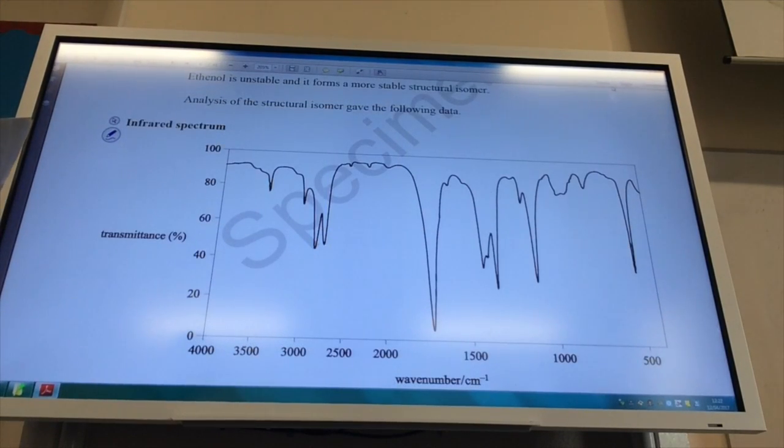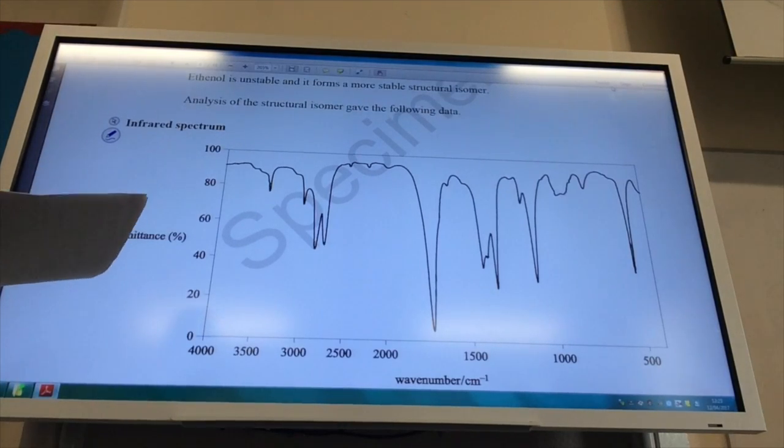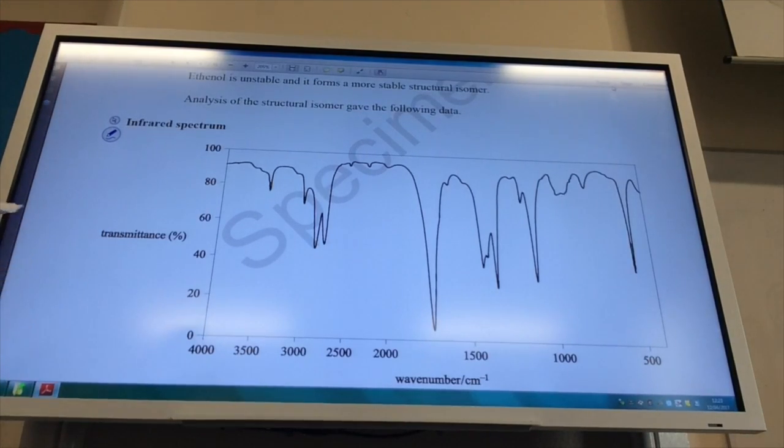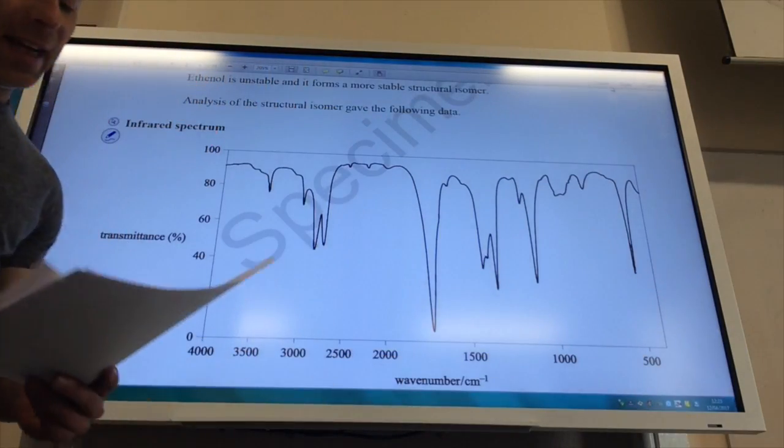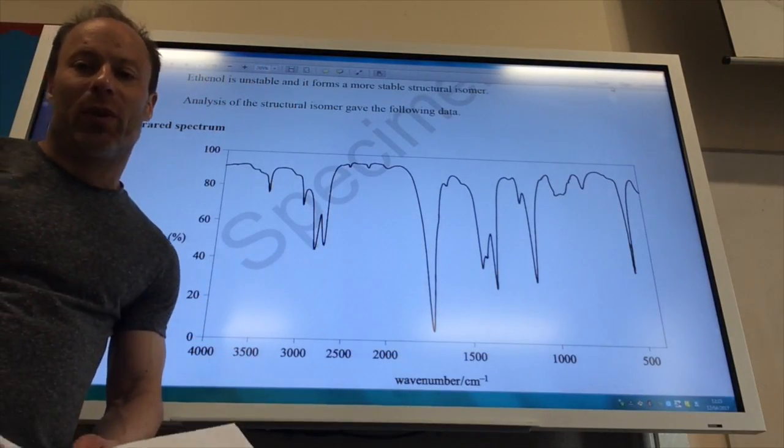Right, so it now wants me to analyse this compound. So polyethanol is unstable and forms a more stable structural isomer. Analysis gives the following data. And it wants me to identify what have I got. Well, if you look at the IR spectrum, what do you notice? Well, there's two things to notice from this. The first one is this whopper of a band there, which is your C double bond O.